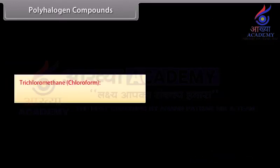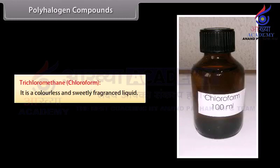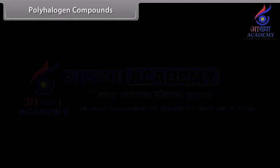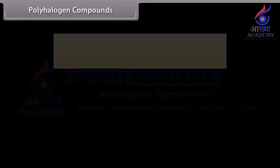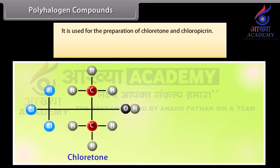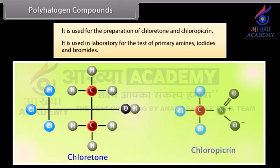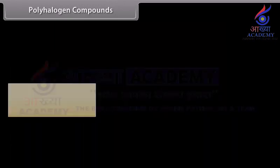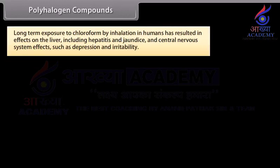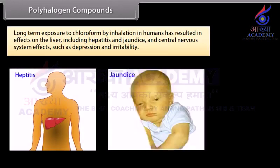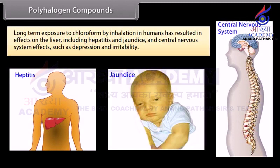Trichloromethane — chloroform: it is a colourless, sweetly fragranced liquid. It is used as a solvent for fats, waxes, rubber, resins, iodine, etc. It is used for the preparation of chloretone and chloropicrin. It is used in the laboratory for the test of primary amines, iodides, and bromides. It can be used as an anesthetic, but due to harmful effects it is not used for this purpose these days. Long-term exposure to chloroform by inhalation in humans has resulted in effects on the liver including hepatitis and jaundice, and central nervous system effects such as depression and irritability.